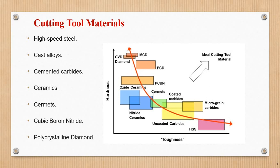Cast iron is used with CVD diamond materials. The cutting tool is selected based on that material.